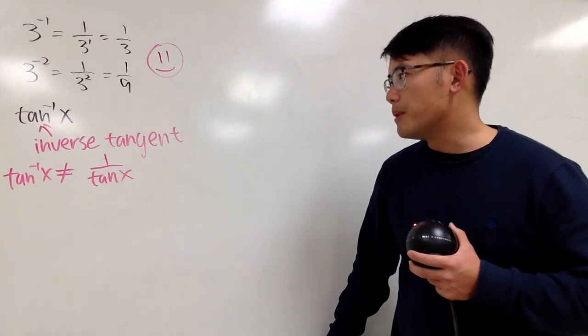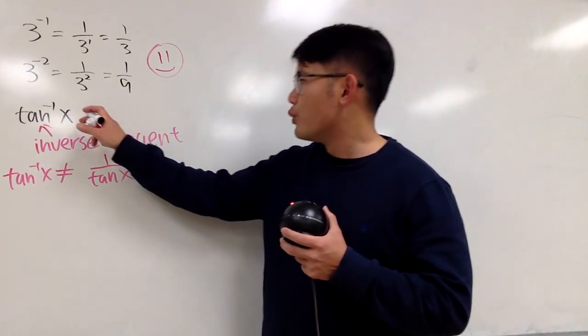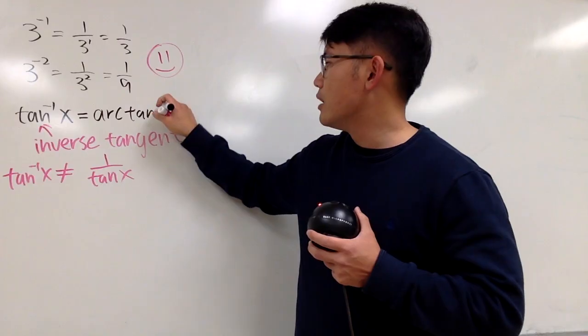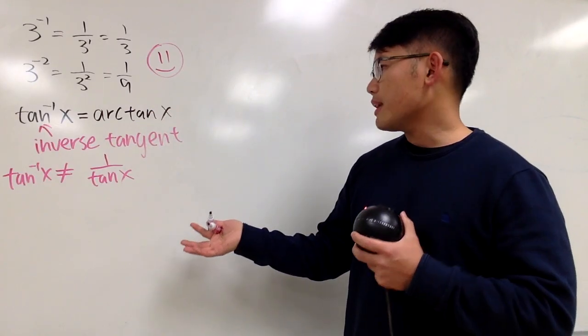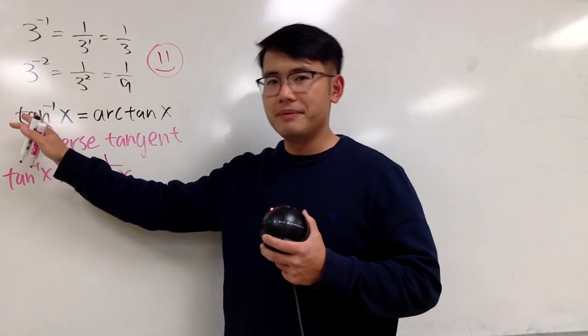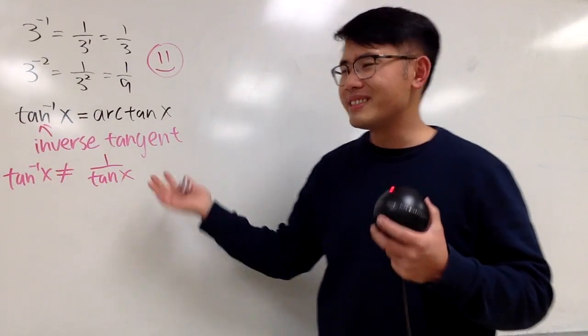Again, even though you see a negative 1 right here with tangent, this does not mean 1 over tangent x. I know a lot of people don't like this notation, and a lot of you would like to just write this as arctan(x) instead. No problem. But a lot of textbooks, and I think it's just a tradition, we use this, so just deal with this, no big deal.